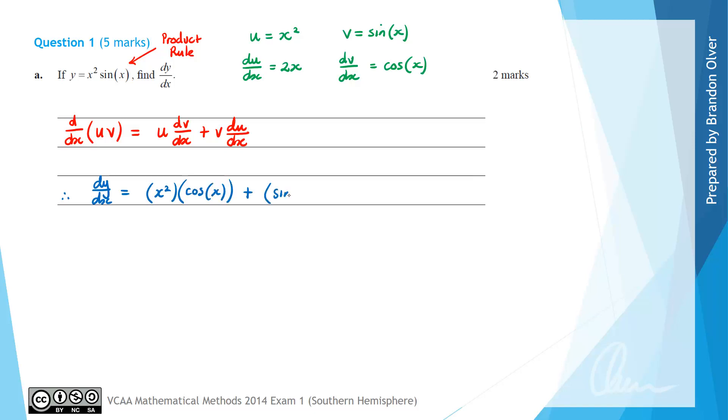plus v, which is sin of x, times du/dx, which is 2x. So that is the answer to part A of this question.